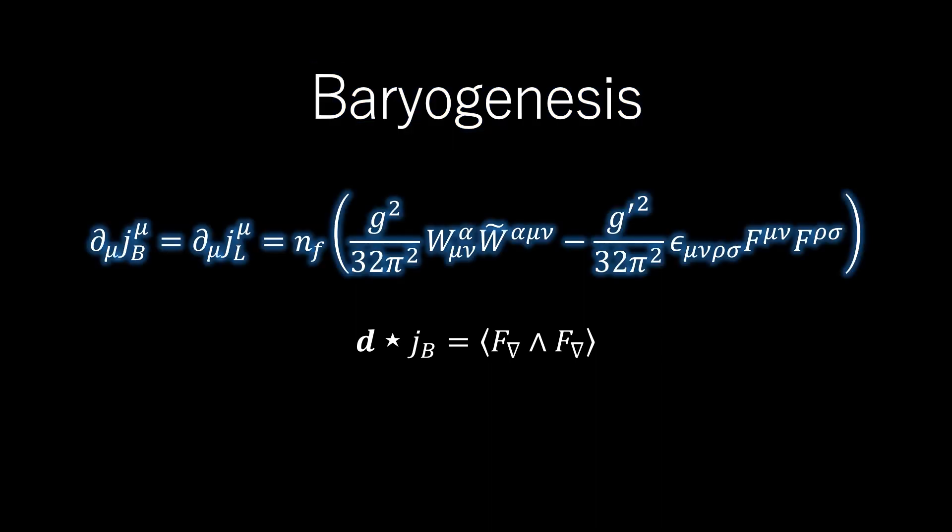Indeed, by a quantum anomaly in the standard model of particle physics, the axial anomaly, the divergence of the baryon current does not quite vanish, but is in traditional physics notation.